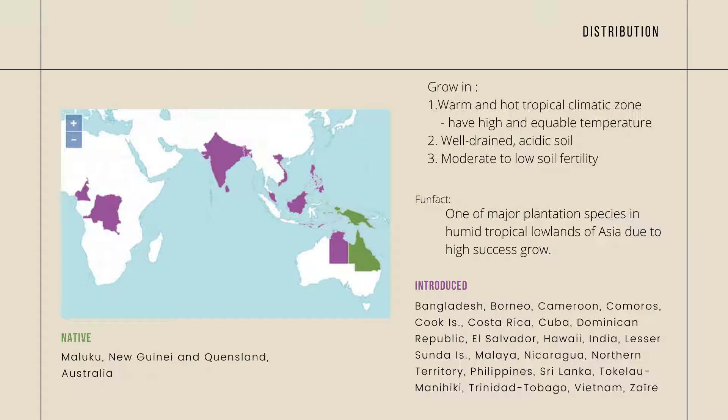Acacia mangium is one of the major plantation species in the humid tropical lowlands of Asia due to its high growth success, extreme growth rate, high acidic tolerance, and easy cultivation establishment. The distribution of the species by country is as shown.